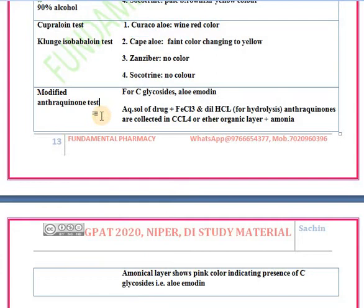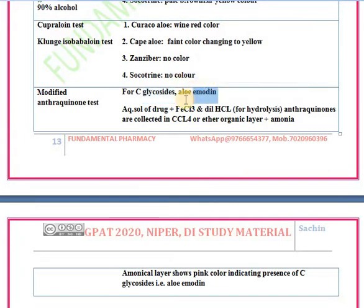The modified anthraquinone test is a specific test for C-glycosides, with aloe-emodin as an example. Add ferric chloride and dilute HCl to an aqueous solution of the drug for hydrolysis. The anthraquinones released are collected in carbon tetrachloride; the ammoniacal layer will show a pink color due to the presence of aloe-emodin, which is a C-type glycoside.